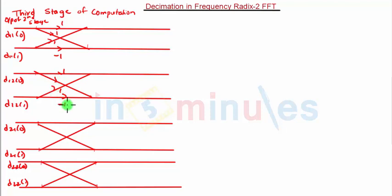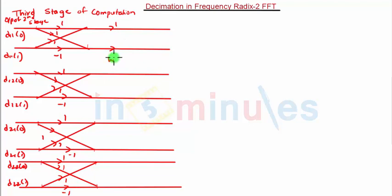The stage 3 butterfly factors follow the same pattern: 1, 1, 1, and minus 1, then 1, 1, 1, and again minus 1, and similarly for the last butterfly. The multiplying twiddle factor at this stage is W2 raised to 0, and it remains the same throughout.